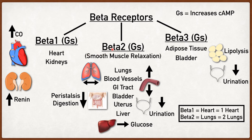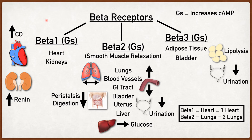Metoprolol is considered to be a beta blocker, meaning that it will block the beta receptors, which prevents the ligand from binding to that particular receptor. The beta 1 receptor mediates an increase in the contractility of the heart or increase in heart rate. Because the beta blocker serves as an antagonist, it will sit into the beta 1 receptor, so the agonist of this beta 1 receptor will not be able to bind. The agonist or ligand of the beta 1 receptor are the catecholamines, particularly epinephrine and norepinephrine.